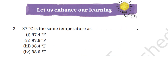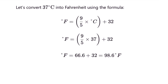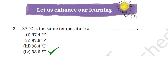Question 2: 37°C is the same temperature as — options are 97.4°F, 97.6°F, 98.4°F, or 98.6°F. Let us convert 37°C into Fahrenheit using the formula: °F = (9/5 × °C) + 32. Substituting 37 for °C and calculating, we get °F = 98.6. So the correct answer is option 4: 98.6°F.